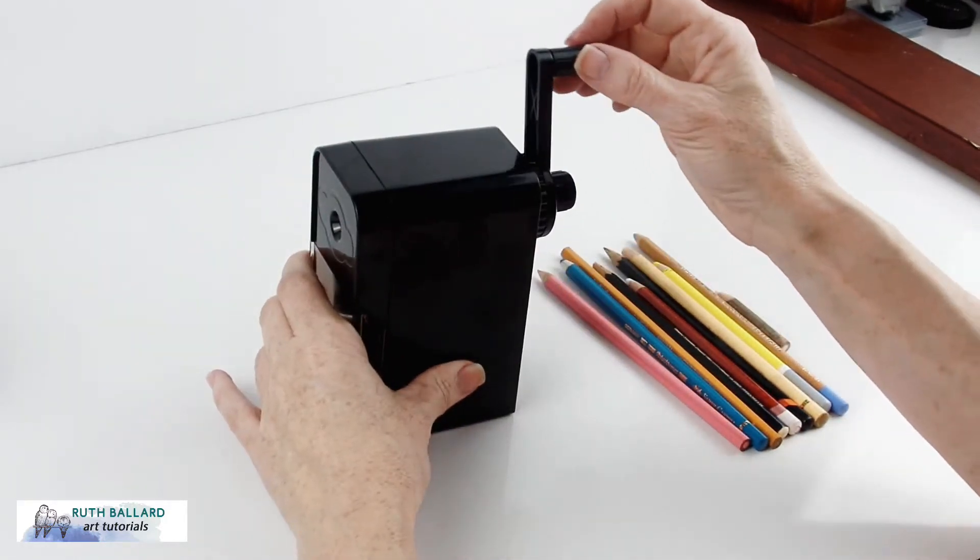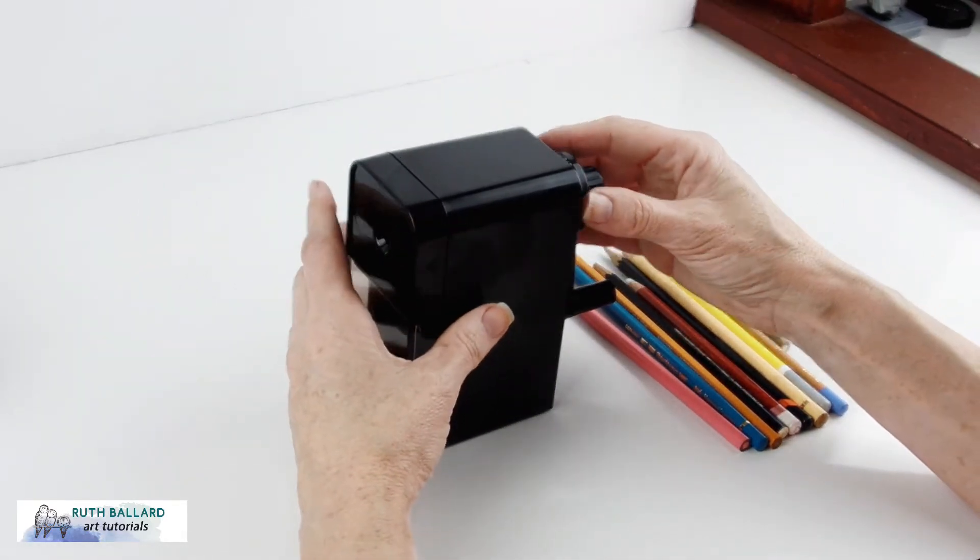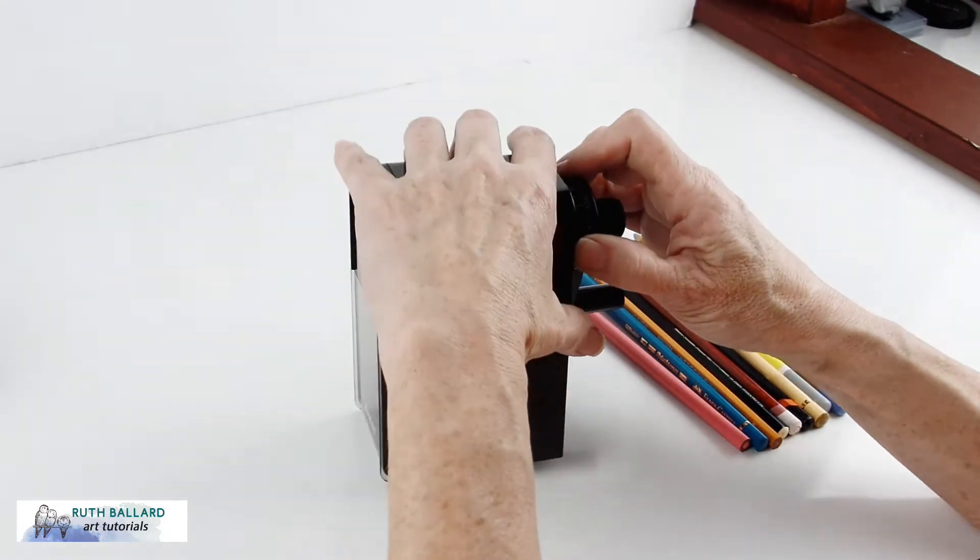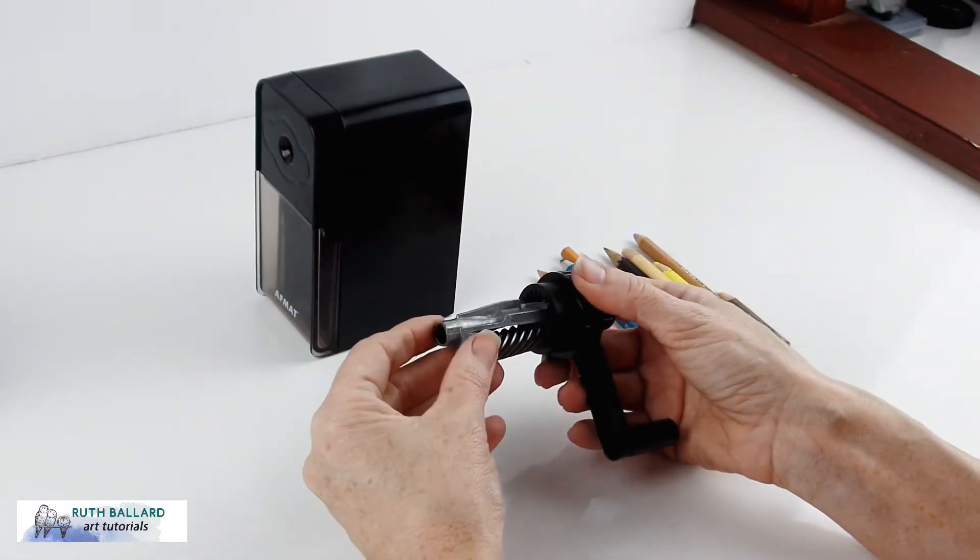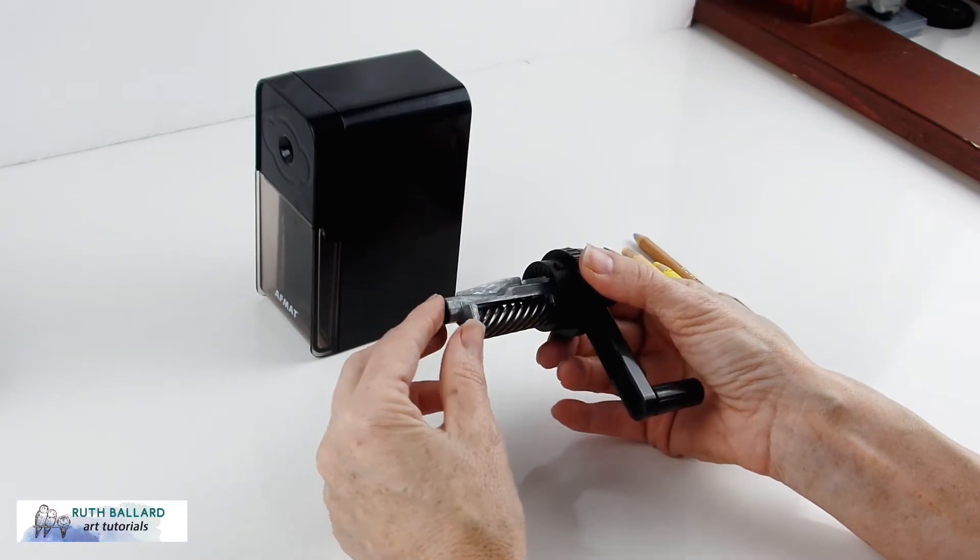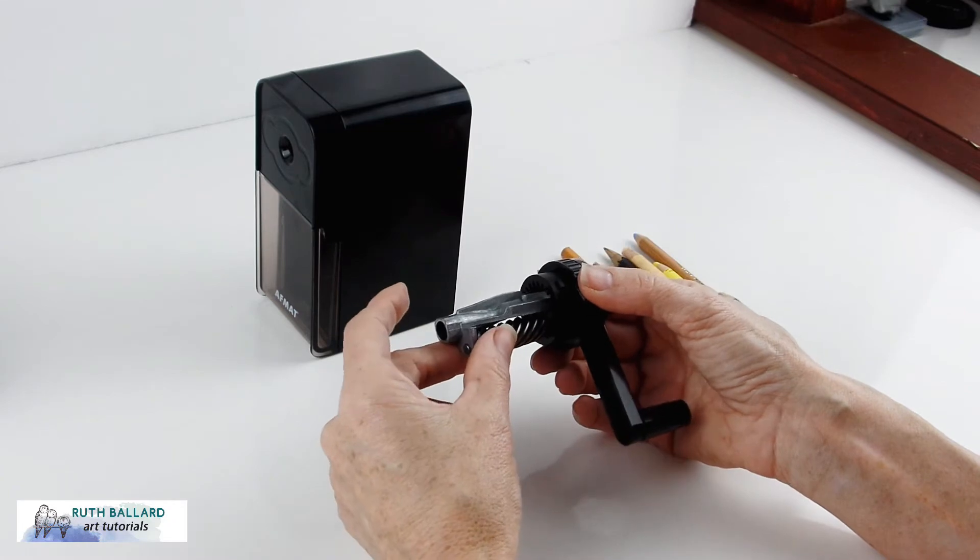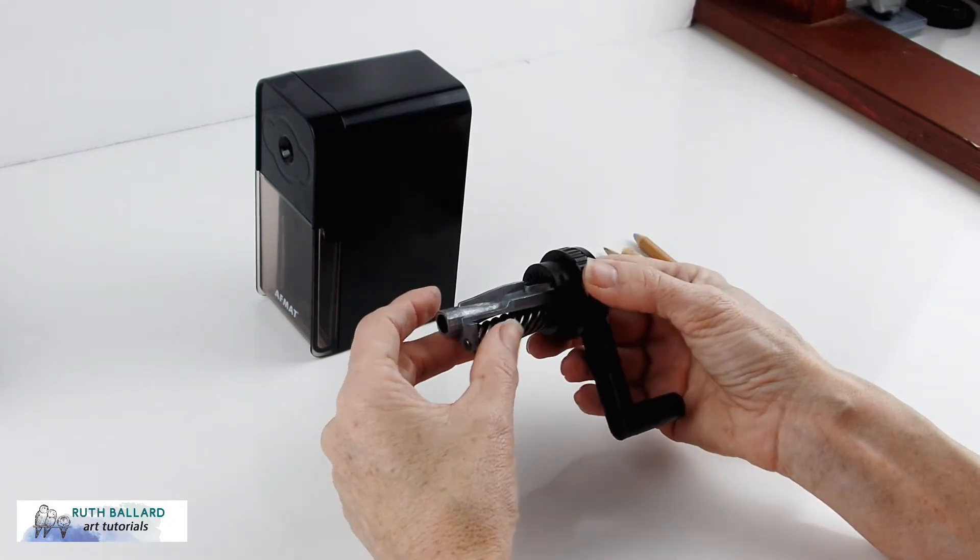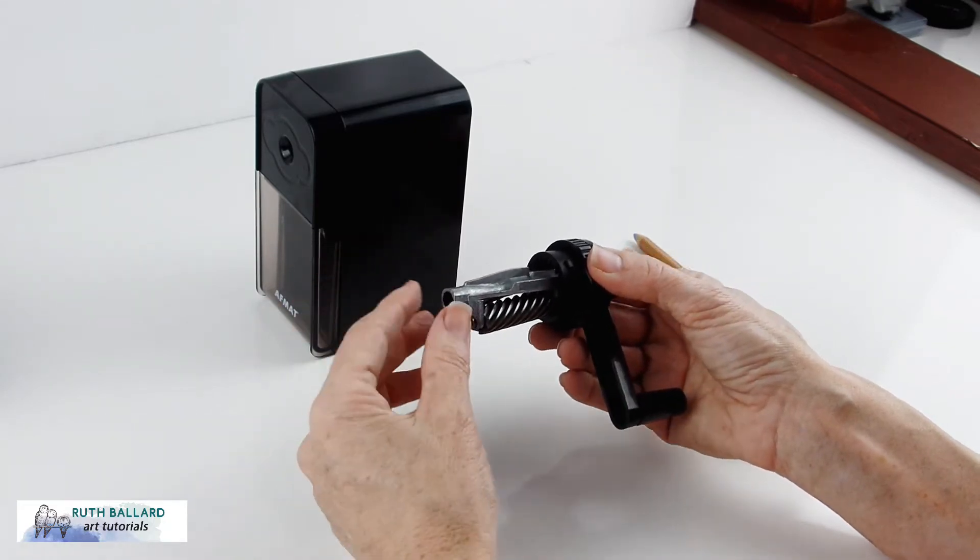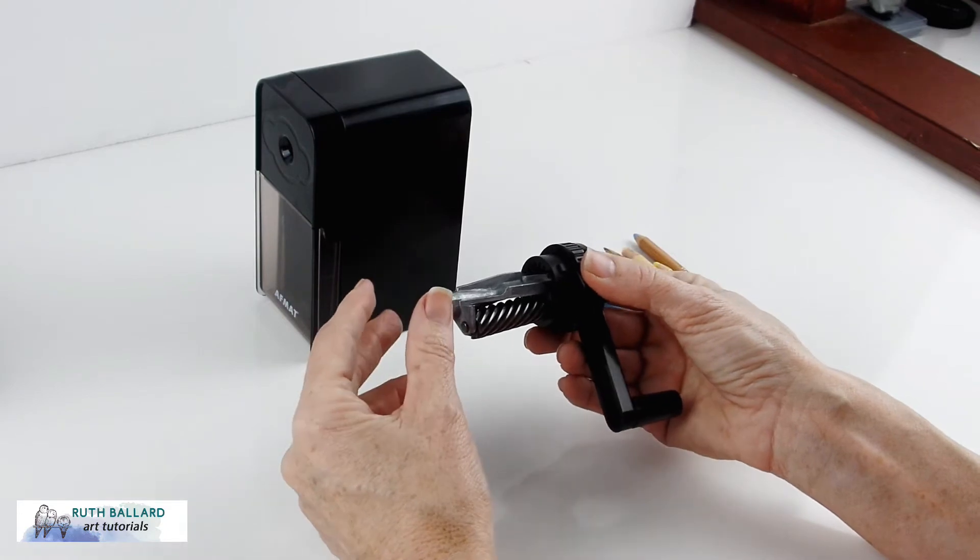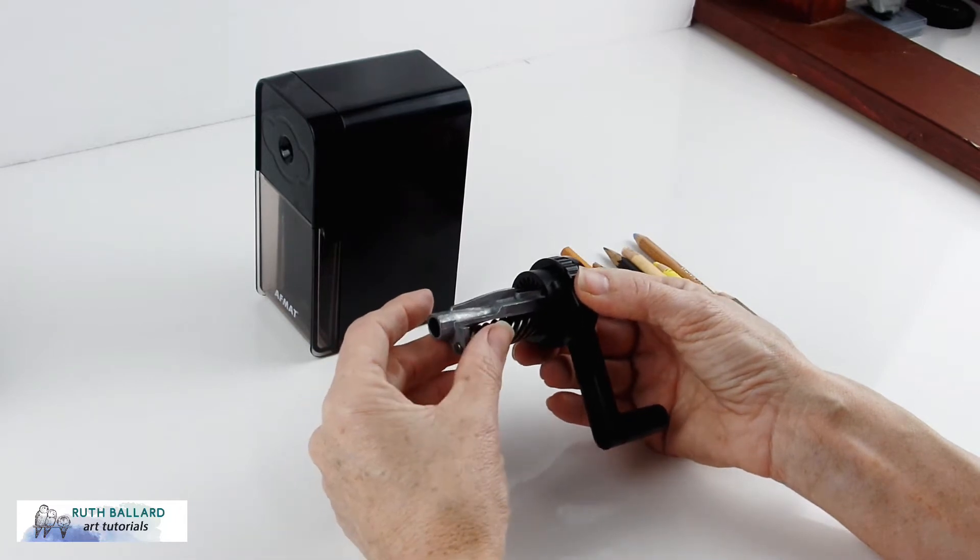It's a hand crank, so there's no battery or need to plug in, and it has a helical blade inside. The pencil remains stationary while the crank moves and the spiral grinds against the sharpener, shaving the wood pencil. As a result, you get a longer and sharper point, and AFMAT claim you can get 3,000 uses before the blade needs replacing.